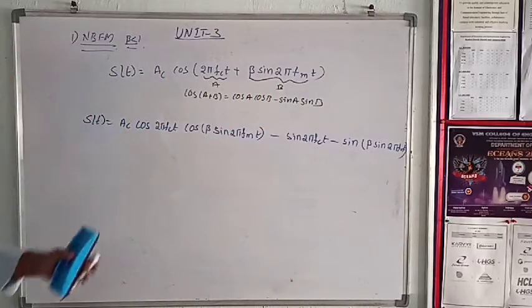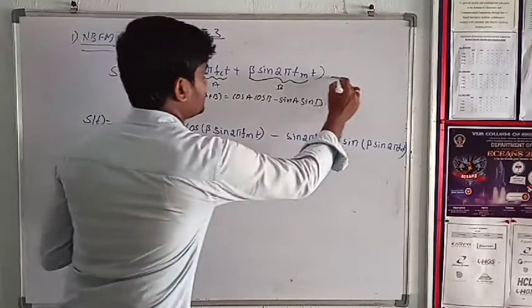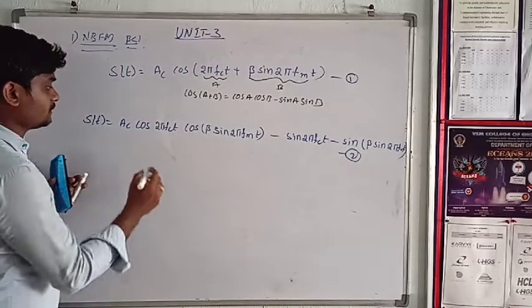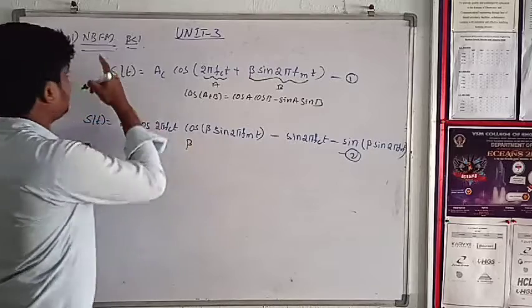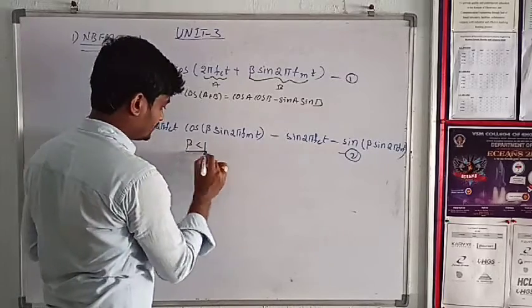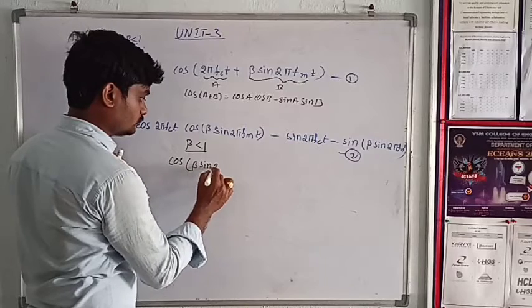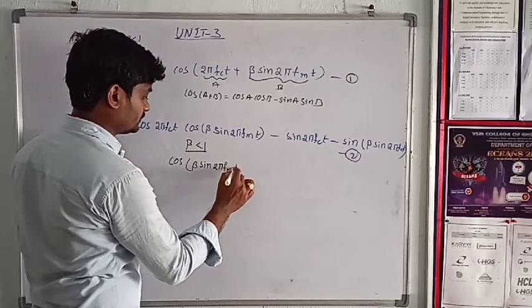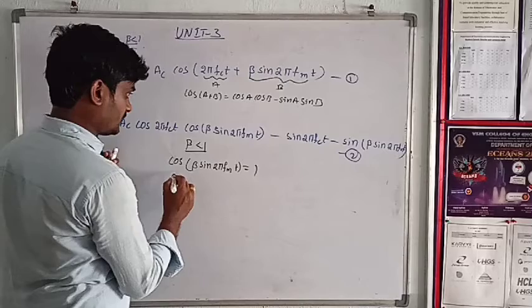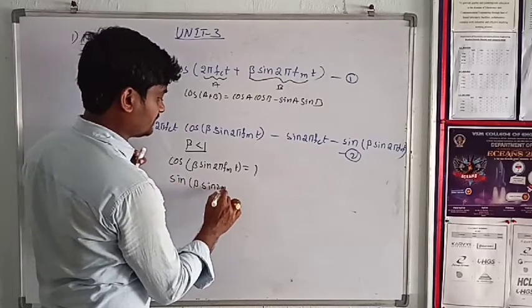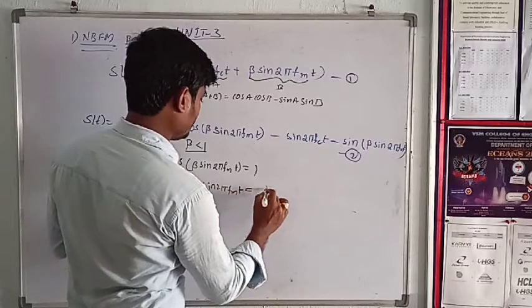This is the above equation. Suppose this is equation 1, this is equation 2. Now in narrowband FM, beta less than 1, then cos beta sin 2 pi FM t equal to 1 and sin beta sin 2 pi FM t nearly equal to theta.